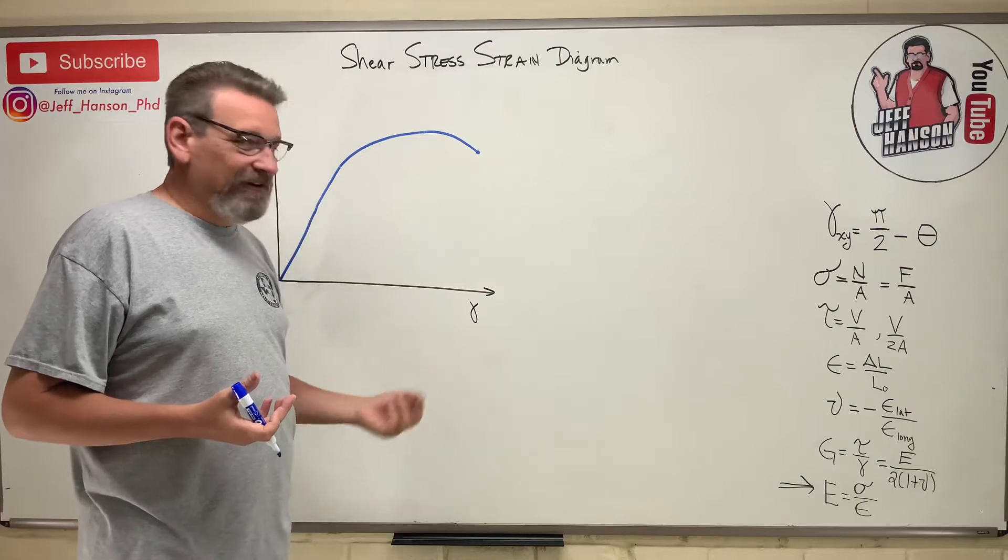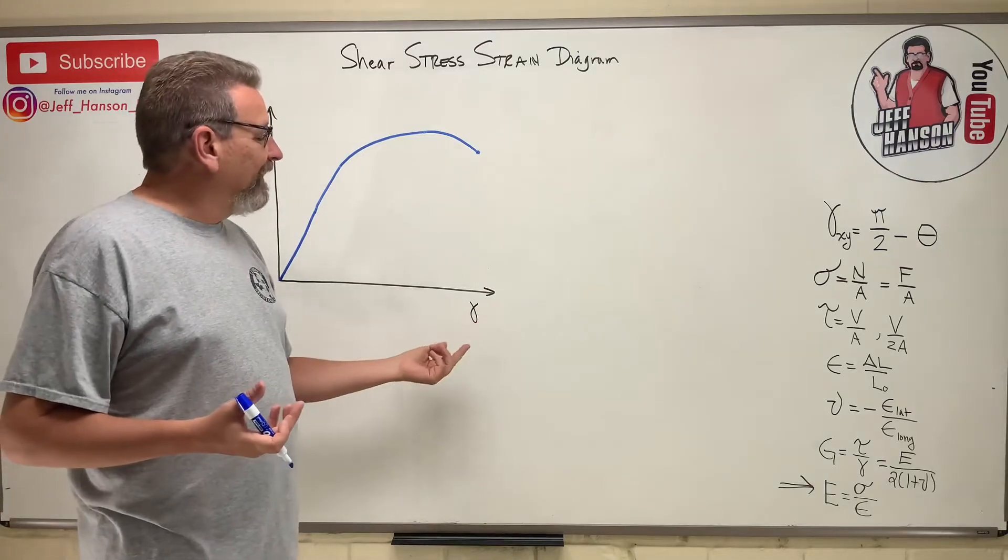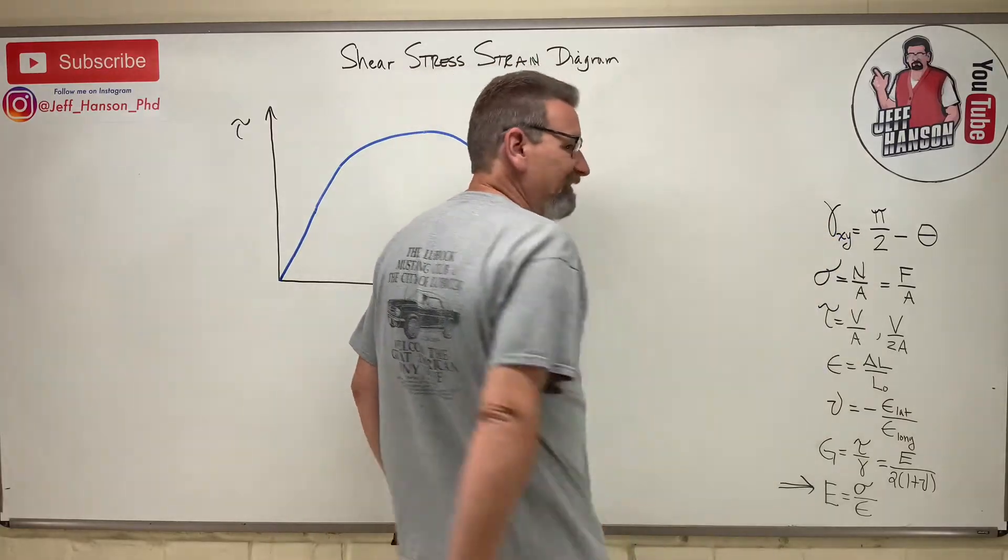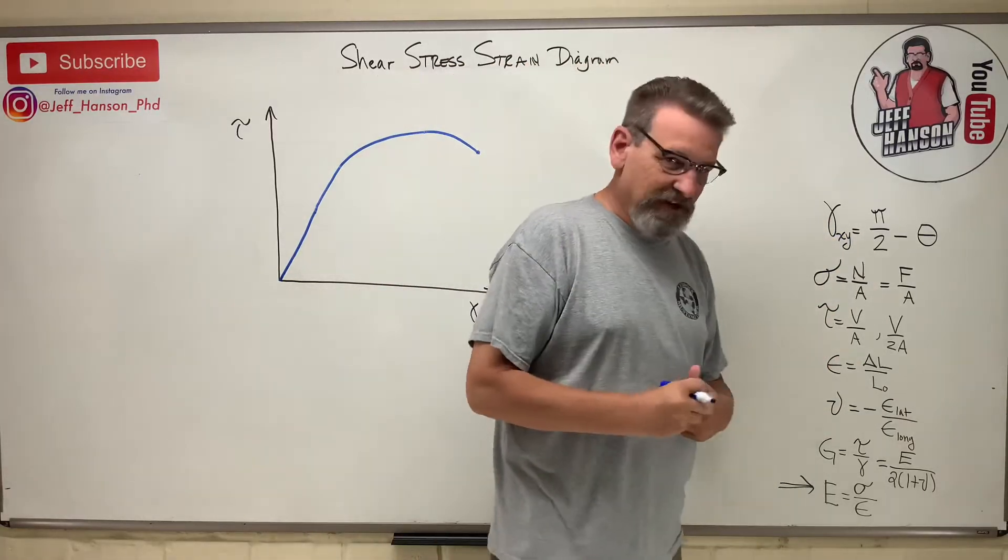Remember, what is that? Dead fish, right? That is this equation here. Remember it was pi over 2, 90 degrees, minus that deformed angle.